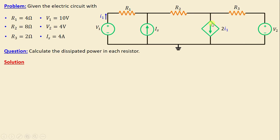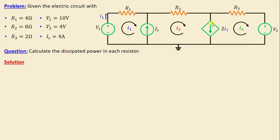Now let's proceed to assign the mesh currents. I will consider I1 as the current in mesh 1, I2 is the current in mesh 2, and I3 is the current in mesh 3. All mesh currents are chosen in the clockwise direction. After assigning the mesh currents, we need to remove the two branches which contain the current source and the dependent current controlled current source.